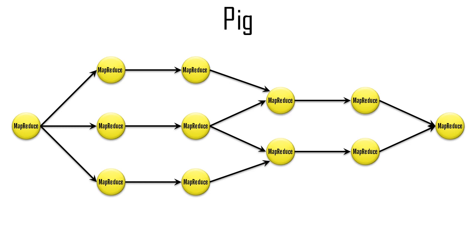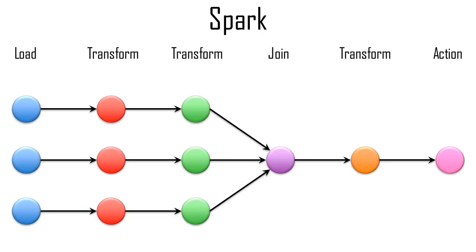Pig offers a terrific higher level of abstraction, but it still depends on Hadoop's disk-based operations. So the Spark system was created to enable you to create data pipelines that can run in memory using many more transformation functions than just Map and Reduce.